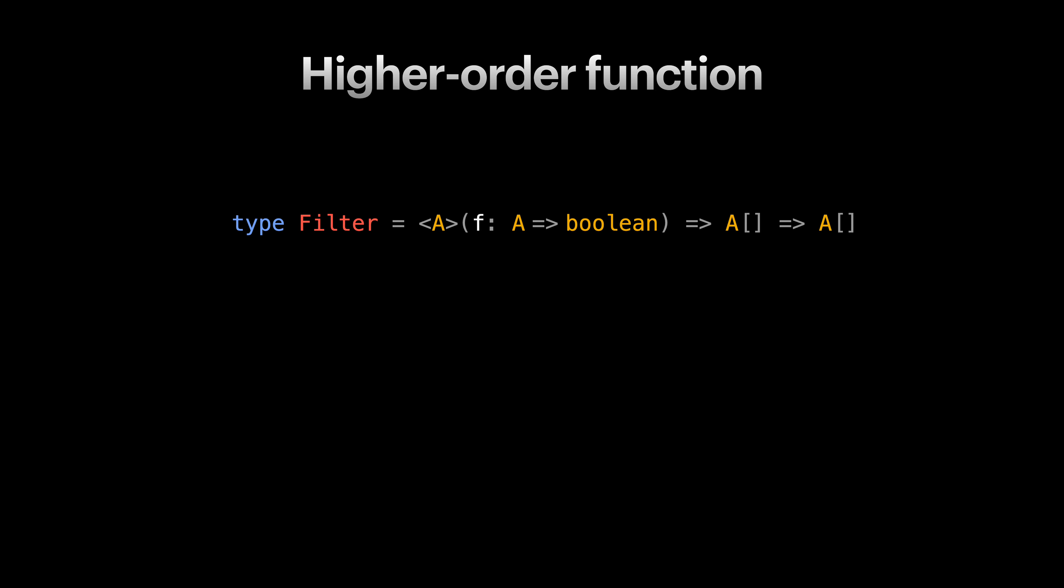Just for the sake of completeness, let's take a look at a simple implementation for our filter function. Our filter function first receives a predicate function f. It then returns another function that gets an array and finally calls the filter method on that array using our predicate function f. And this is one way of defining the filter function for arrays.